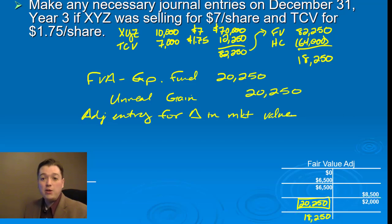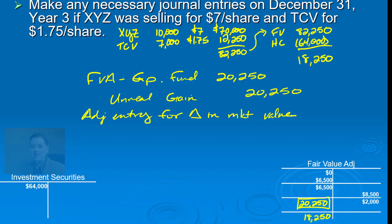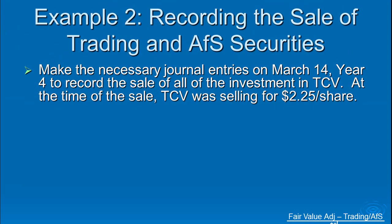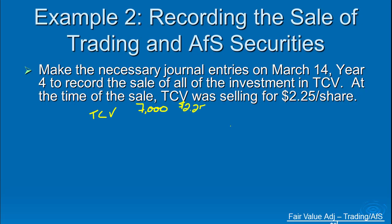Hopefully that helps clarify things if you had any issues with the calculation. The next thing we need to talk about is what happens when we sell them off. On March 14th they decided they were going to sell all of their investment in TCV because it had finally jumped up. We paid $2 for it and TCV had been well below that $2, even with our big portfolio adjustment at the end of year three. Now that it's finally gone above $2 per share, we're going to sell it quickly so we're not in the hole again on this security. The proceeds are going to be $15,750.